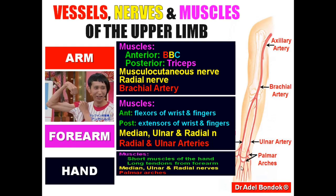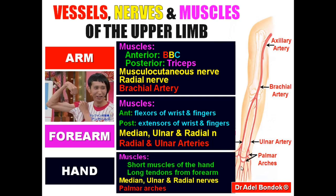Regarding the hand: muscles include short muscles and long tendons coming from the forearm. The nerves are the continuation or termination of the median, ulnar, and radial nerves. The arteries are the palmar arches — the superficial palmar arch and deep palmar arch — which are the continuation of the radial and ulnar arteries.